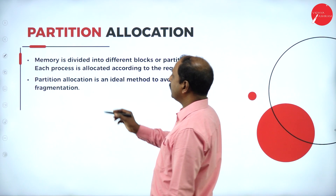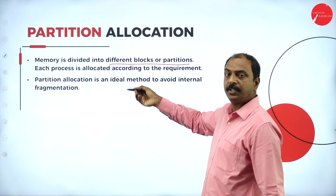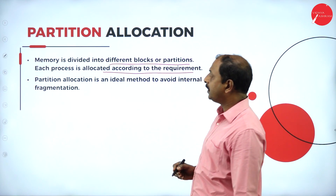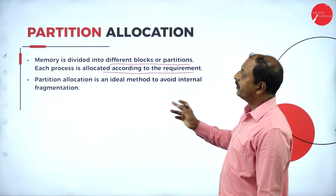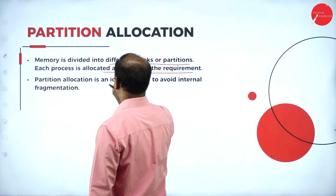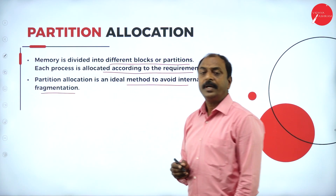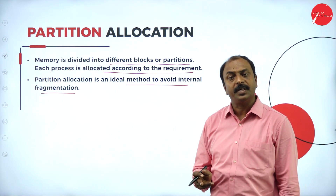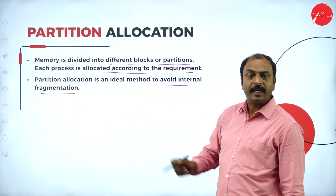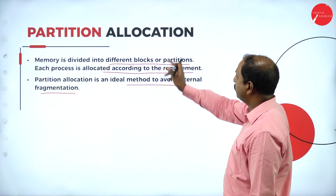Next is partition allocation. Memory is divided into different blocks or partitions. Each process is allocated according to its requirement. Partition allocation is an ideal method to avoid internal fragmentation — instead of having all data and information in one location, it is better to have partitions so that different programs can be allotted different partitions for storage.